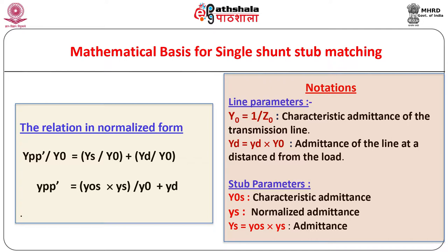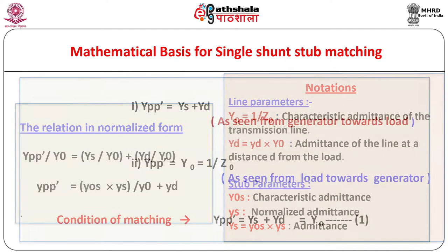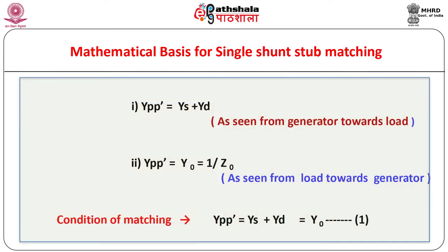Note the notations used in the derivation. Y0 represents the characteristic admittance of the transmission line, YS represents the admittance of the stub, YD represents the admittance of the line, and so on. Please see the definitions properly.